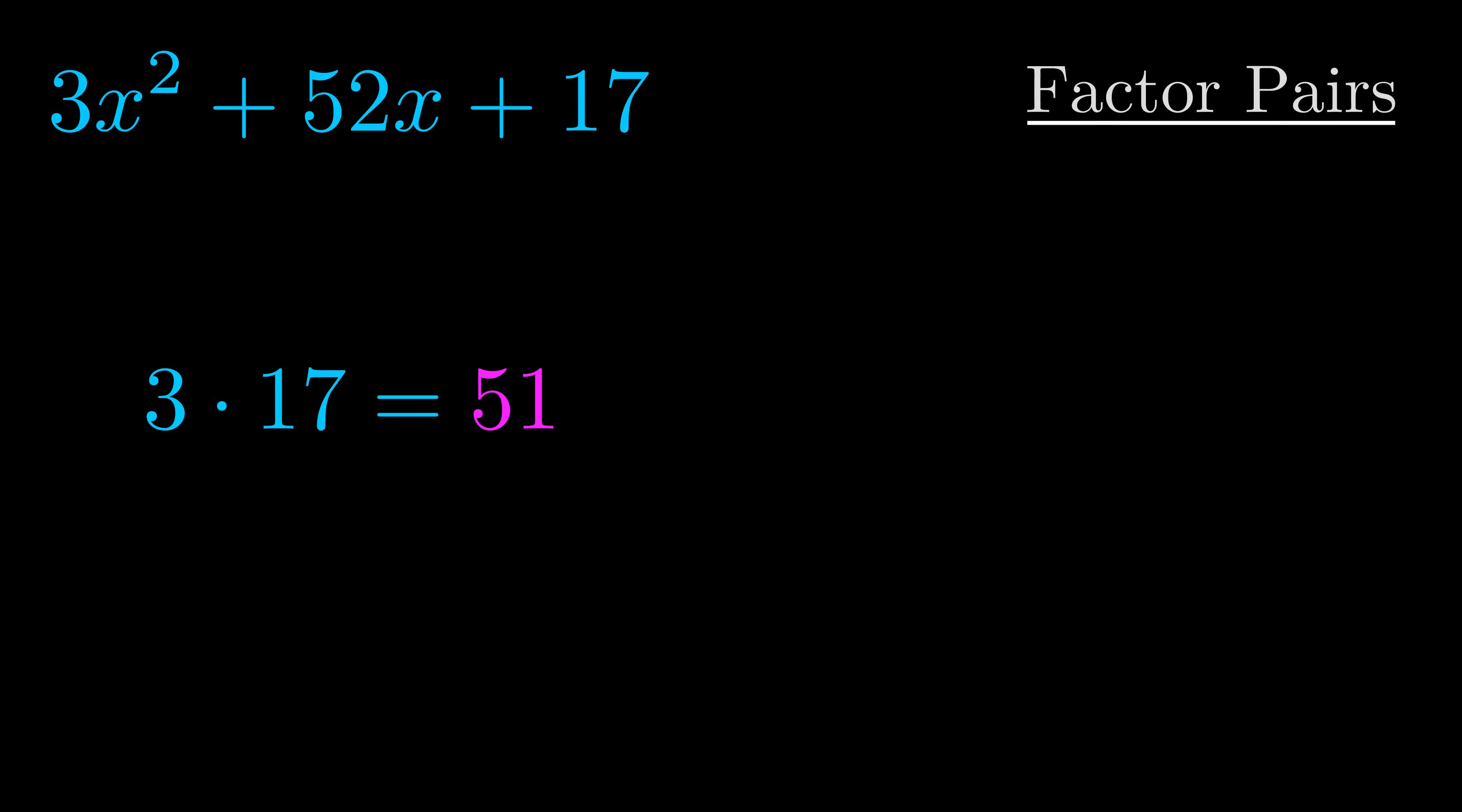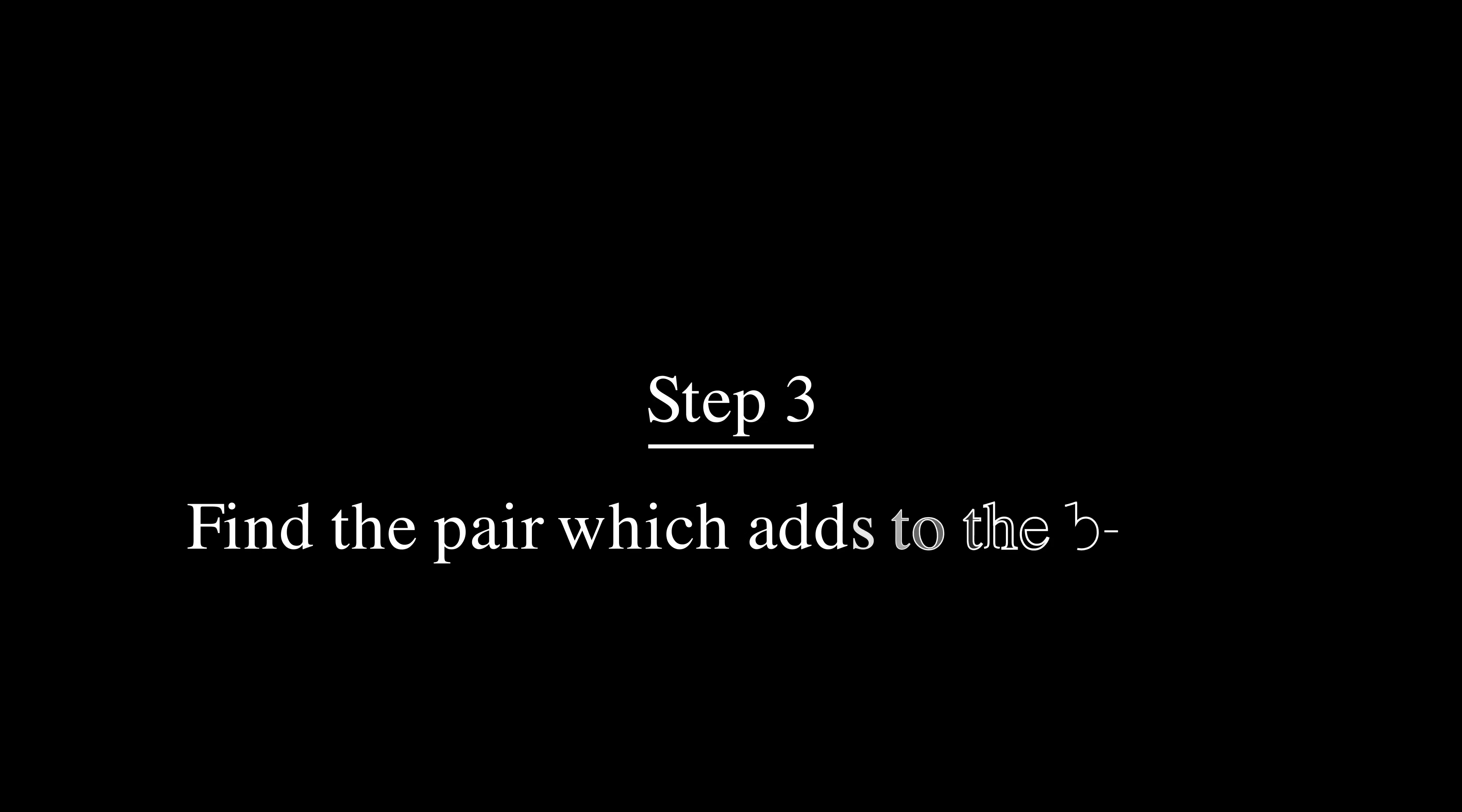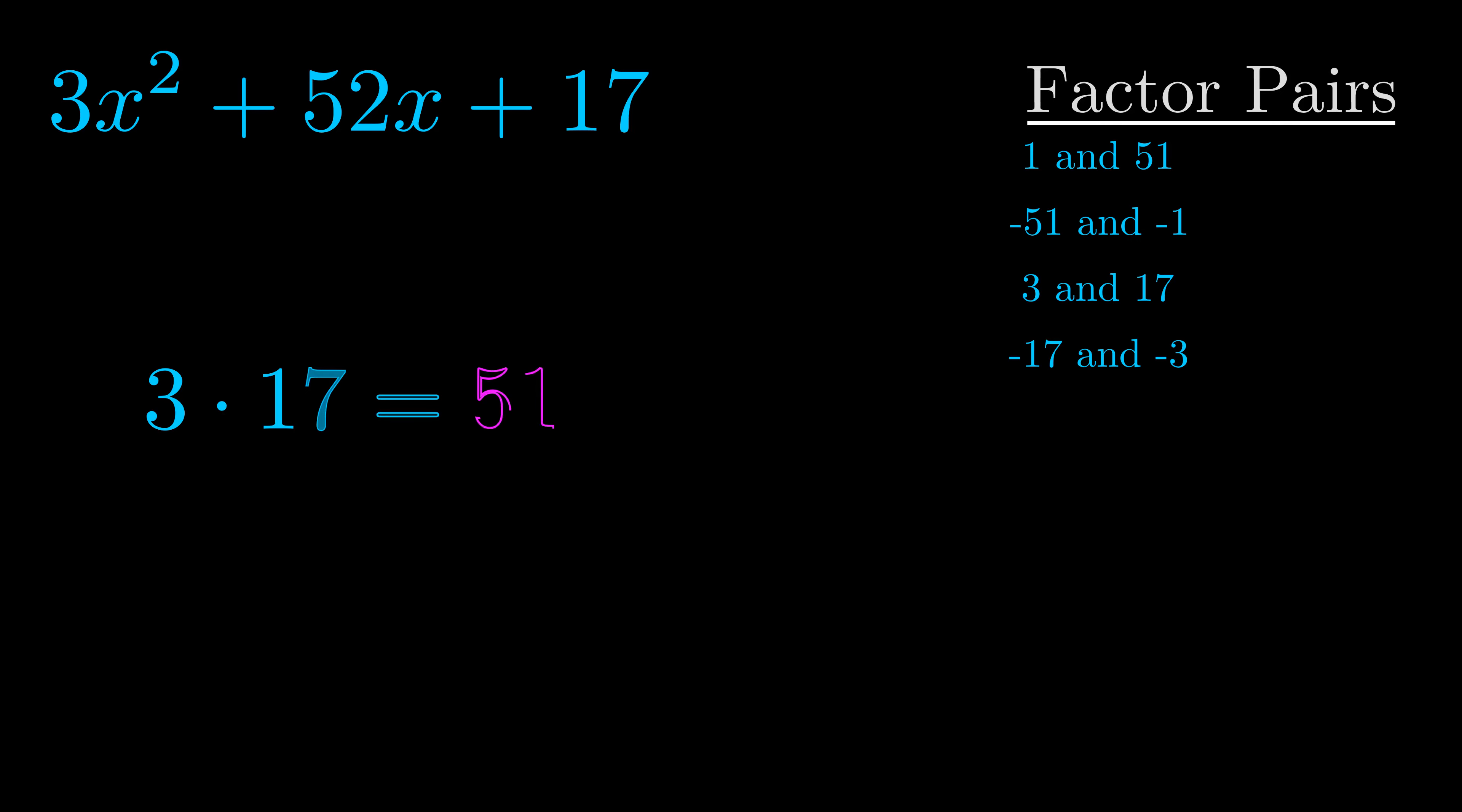Okay here's what I came up with. Now once you have these factor pairs the goal is to find which of these pairs adds to the b value. The b value is the coefficient on the x term. That's the middle term, the one that we haven't done anything with yet. And really this is the only factor pair that we need.